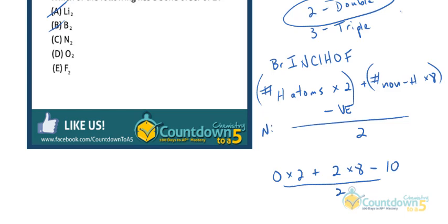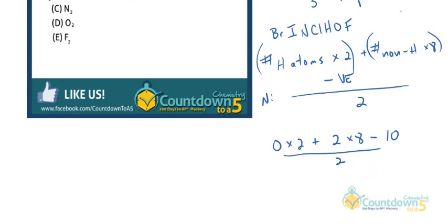Again, this is for nitrogen. And we get 16, this is 0, right? 16 minus 10 is 6, divided by 2 is 3. So we know that nitrogen has a triple bond, or a bond order of 3.